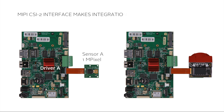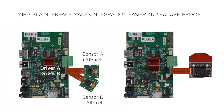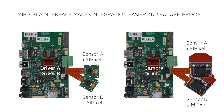A MIPI CSI2 interface makes integration easier and future-proof. Normally, each sensor module needs a specific driver to be integrated into an embedded system. With Allied Vision CSI2 cameras, one driver applies to all models of the camera line regardless of the sensor. The interface to the sensor happens within the camera, meaning you can replace your 1-megapixel camera with a 2-megapixel camera or add new cameras to your system without touching the driver.